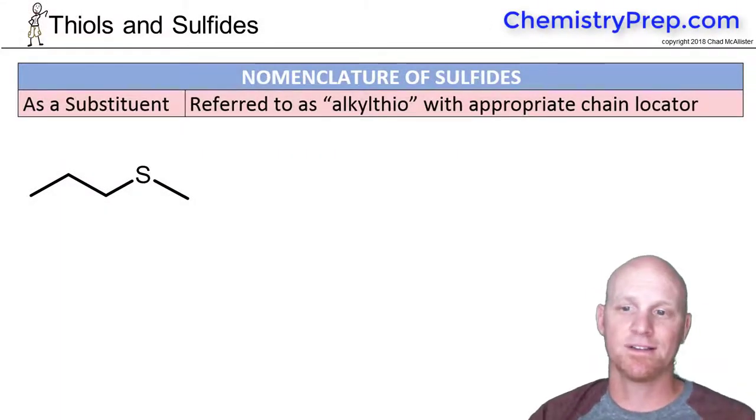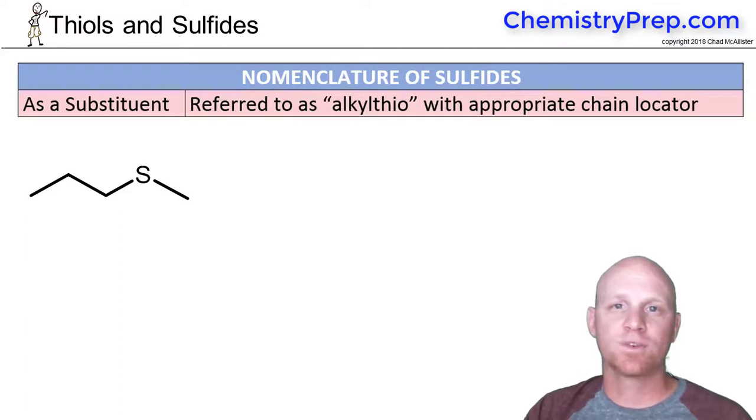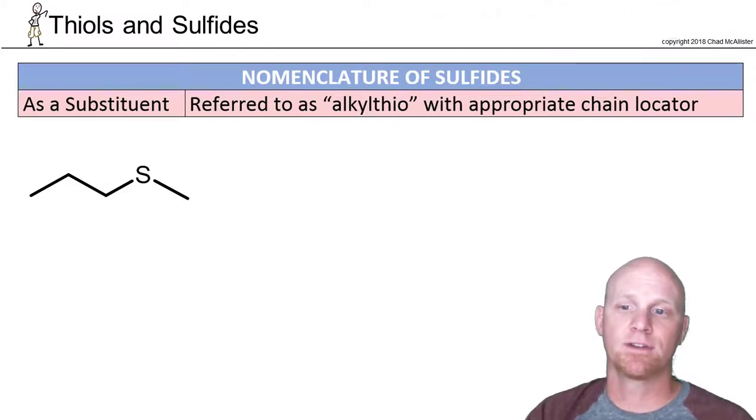So now we'll talk about the nomenclature of sulfides. Just like a thiol was the sulfur analog of an alcohol, a sulfide is the sulfur analog of an ether.